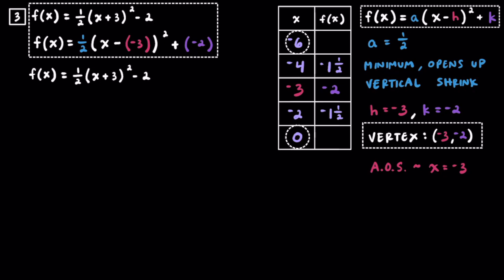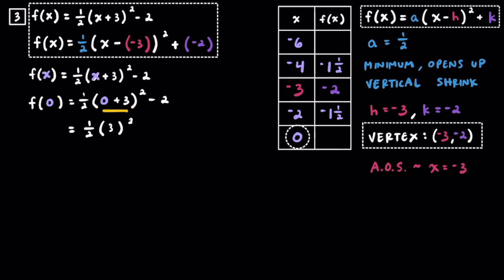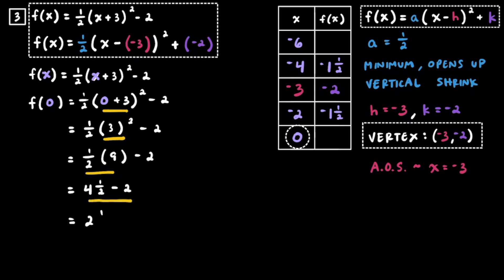Now choosing x equals 0: substituting 0 into the function, 0 plus 3 is 3, so we have one half times 3 squared minus 2. Three squared is 9, giving one half times 9 minus 2. One half times 9 is 4 and one half, and 4 and one half minus 2 is 2 and one half. So when x equals 0, y equals 2 and one half. By symmetry, when x equals negative 6, f of x also equals 2 and one half. We can write those into the table to complete it.